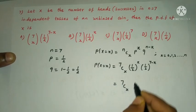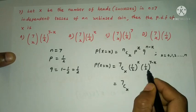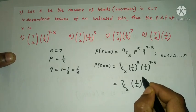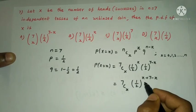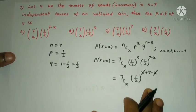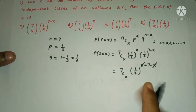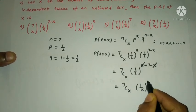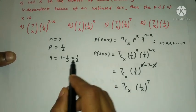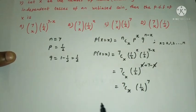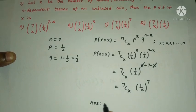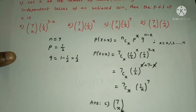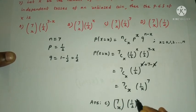Since the bases are the same, combining the powers: (1/2)^x × (1/2)^(7−x) = (1/2)^7. Therefore P(X = x) = 7Cx × (1/2)^7. The answer is option C: 7Cx × (1/2)^7.